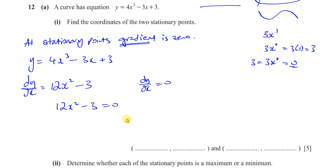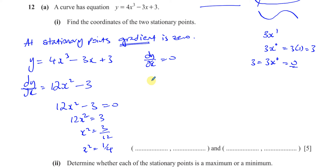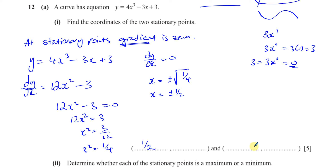We solve 12x squared minus 3 equals 0. Subtract 3 from both sides to get 12x squared equals 3. Divide to get x squared equals 3 over 12, which is 1 over 4. Taking the square root of both sides, x equals plus or minus a half. So we know x equals positive or negative a half.